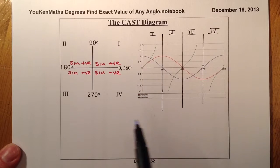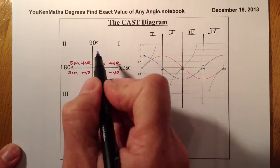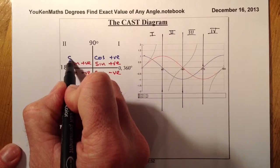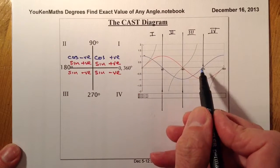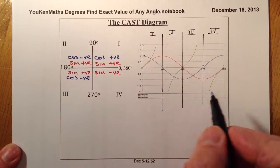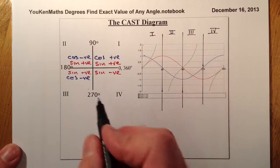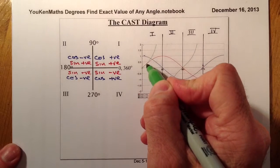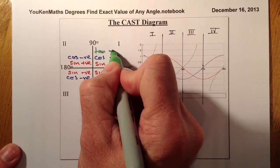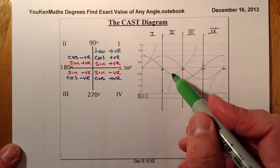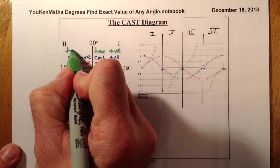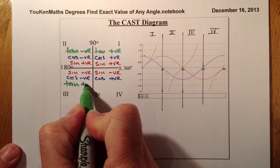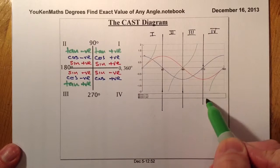Looking at the cosine graph: in quadrant one, cosine is positive. In quadrant two, it's gone underneath, so cosine is negative. It's still negative in quadrant three. When we get to quadrant four, it appears above the x-axis, so cosine is positive there. For the tan graph: tan is positive in the first quadrant, negative in the second, positive in the third, and negative in the fourth.